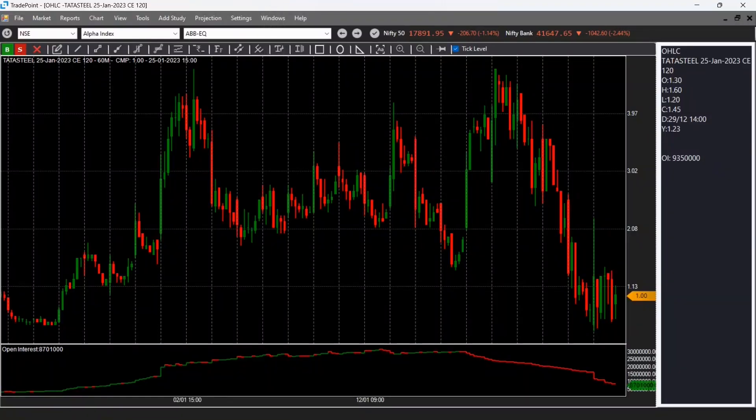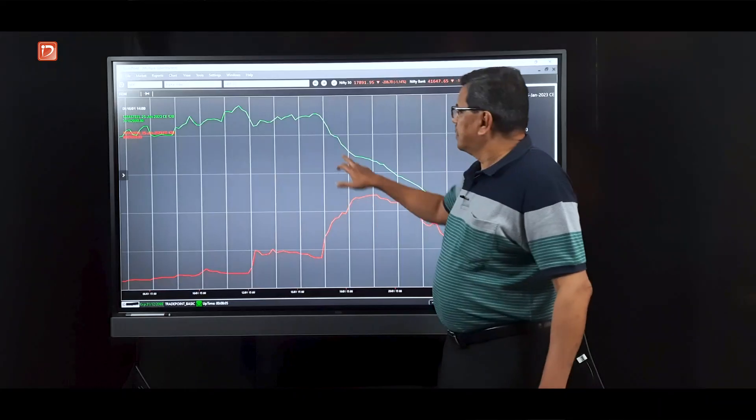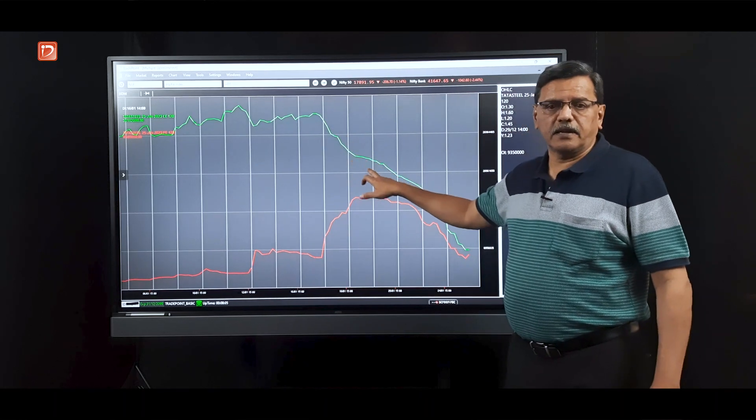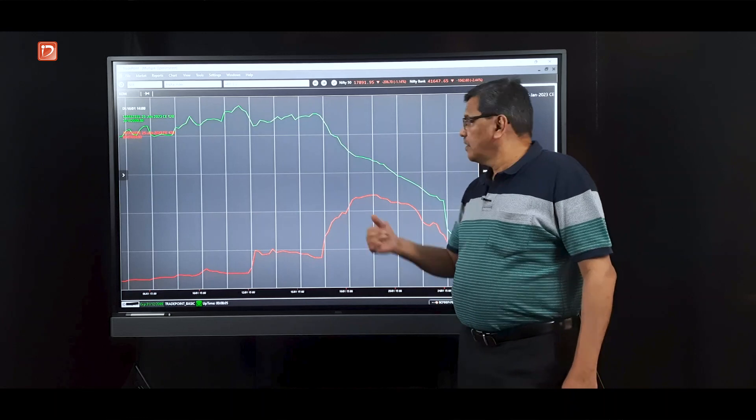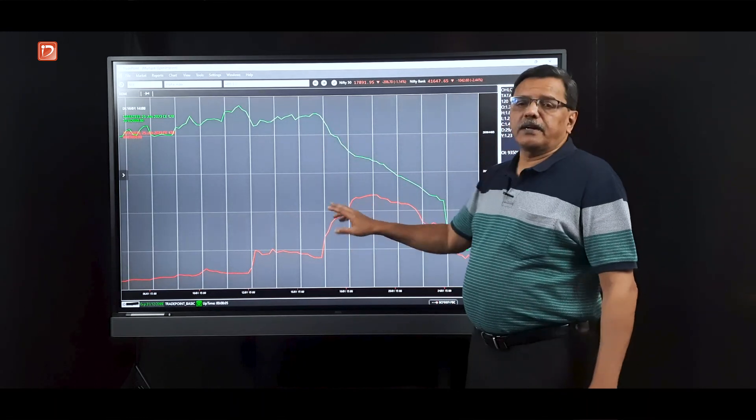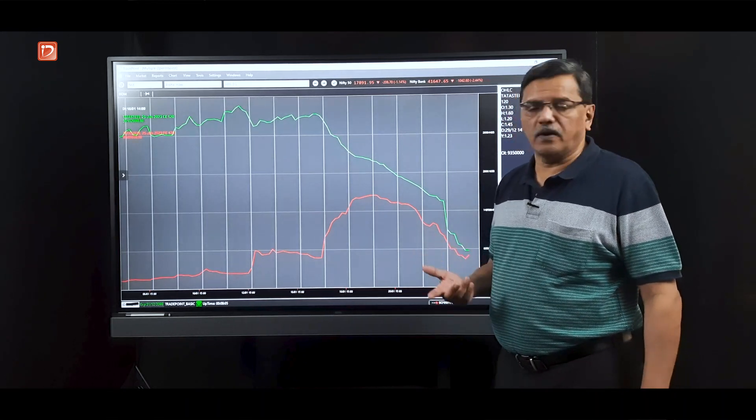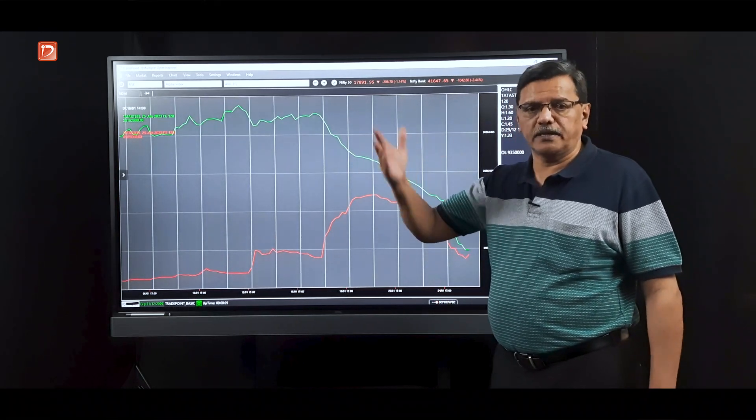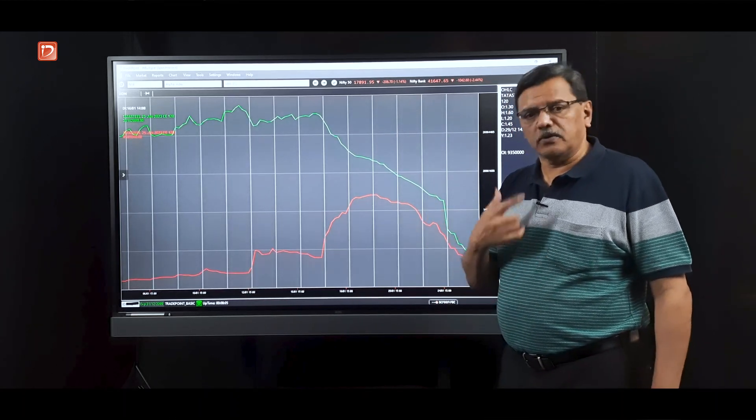And then what happened to the multiple operators here again? So here the 120 call writers started covering when Tata Steel took support at 115 and started rising again. So 120 call writers started covering, but the put writers were not showing enough strength, which means they didn't have the confidence that Tata Steel will go and cross and sustain well above 120.